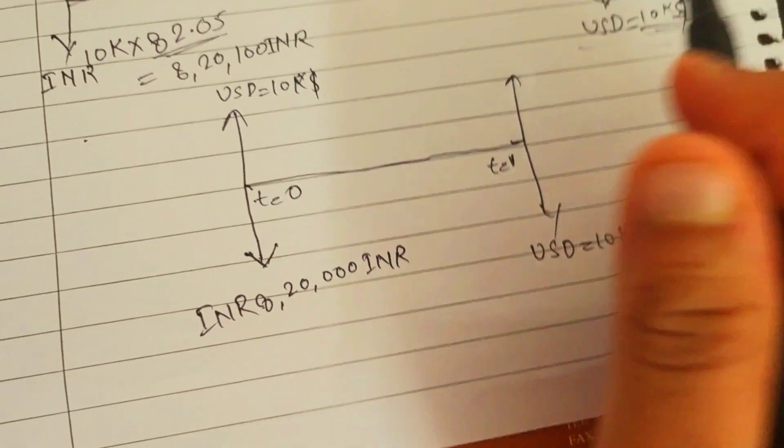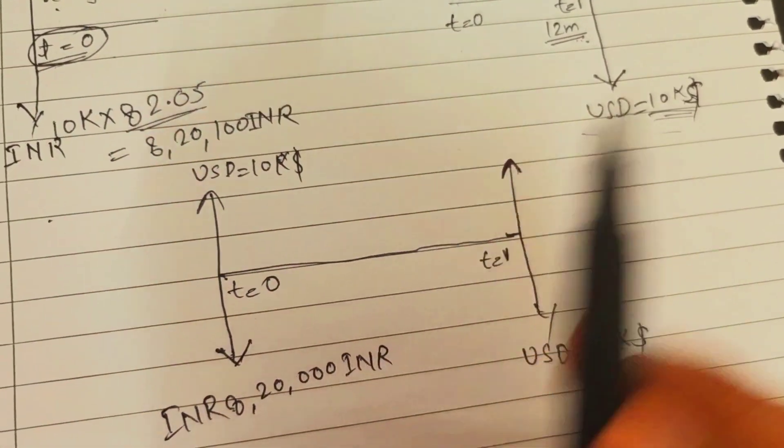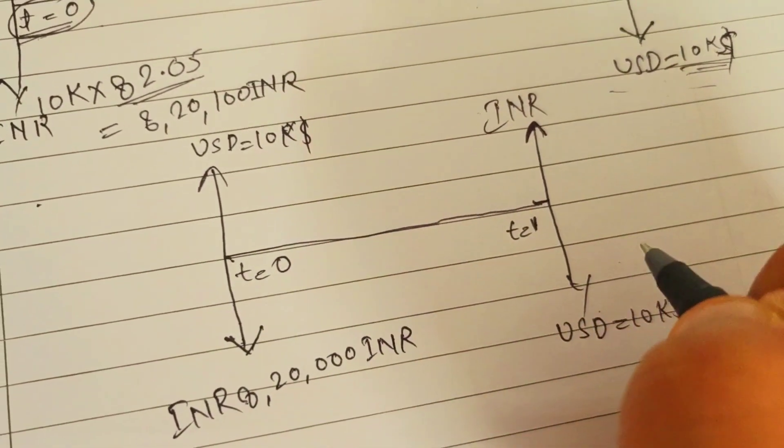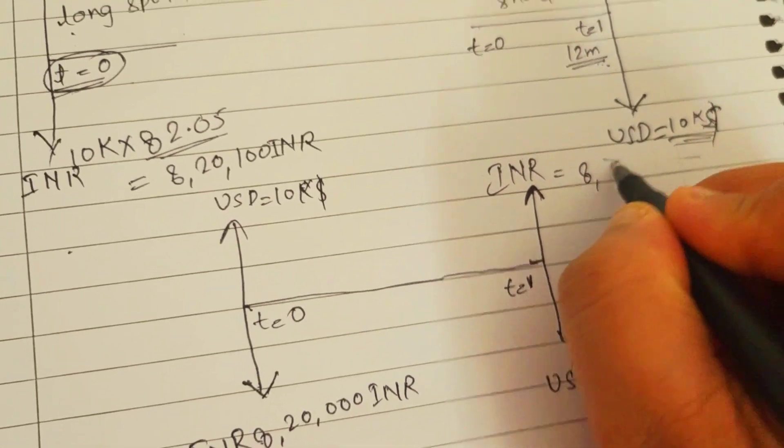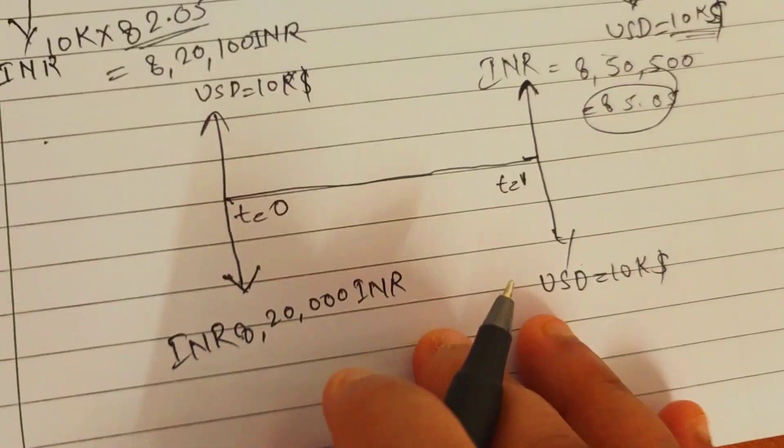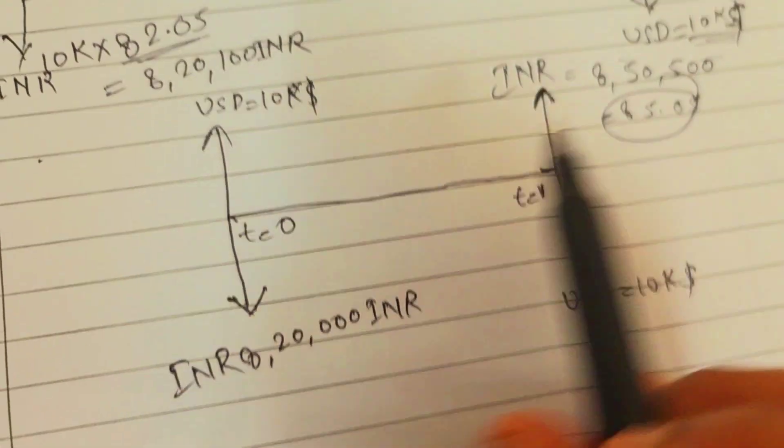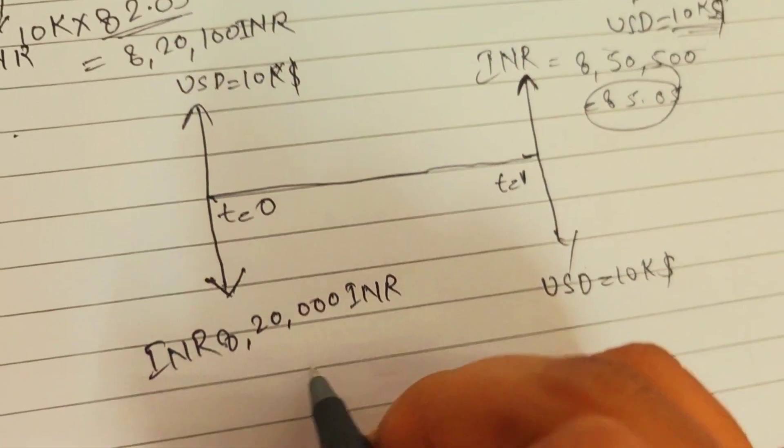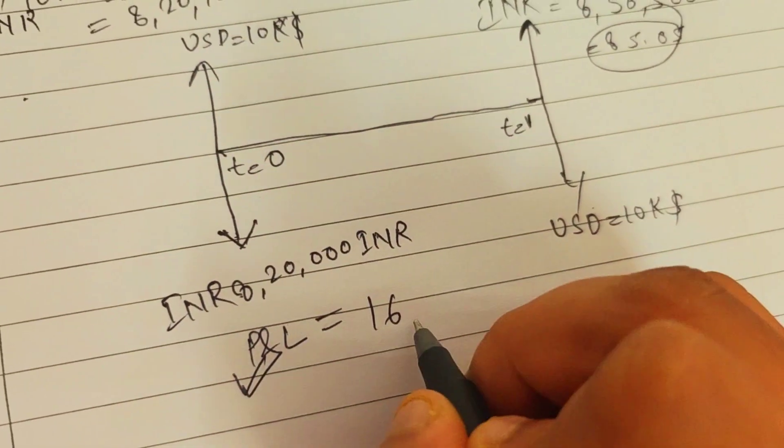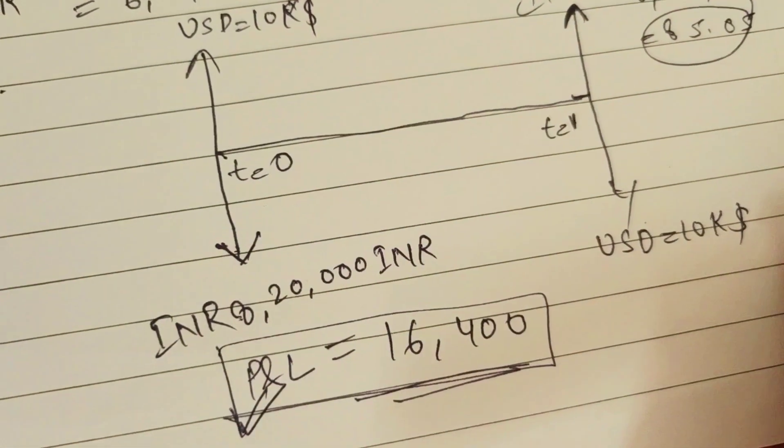He paid 8,20,000 in INR when he wanted to buy this, but with the forward contract on a future day, he received 8,50,500 with 85.05 as a rate. The profit this person made is 8,50,500 minus 8,20,000, so he made a P&L which is a profit of 30,400.